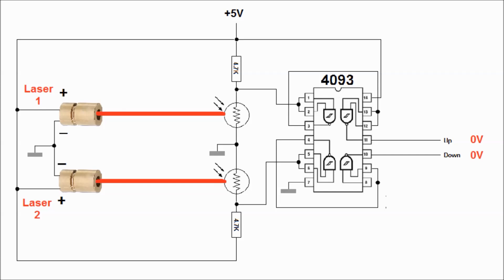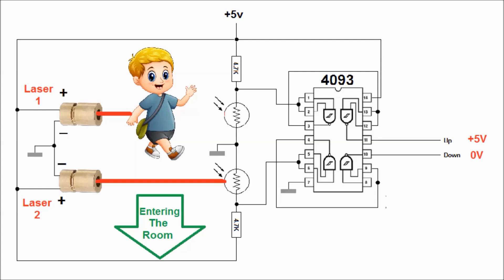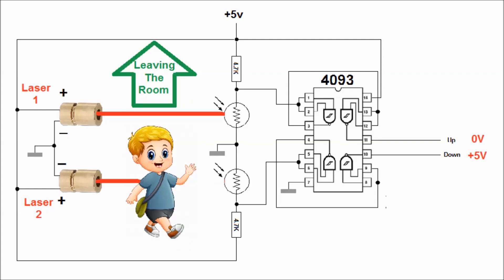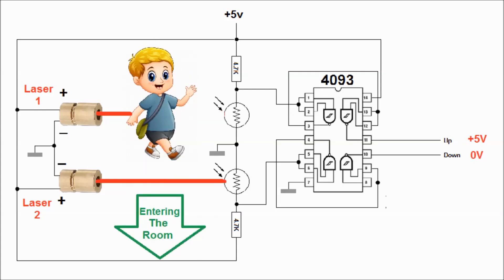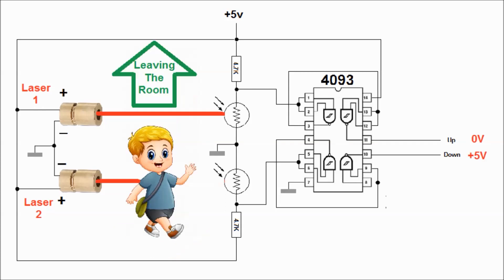The second part of this circuit is two laser beams and two LDRs to count the number of persons entering or leaving the room. The reason we're using two laser beams instead of only one is because the circuit has to identify if the person is entering the room or leaving the room. So if the human body cuts the laser beam number one first, that means he's entering the room. But if the human body cuts the laser beam number two first, that means he's leaving the room.